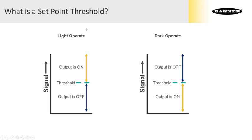If the amplifier is in light operate mode, the output is on when the amplifier sees more light than the threshold and off when it sees less light than the threshold.